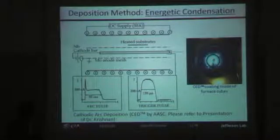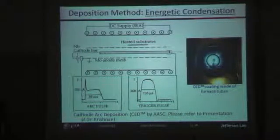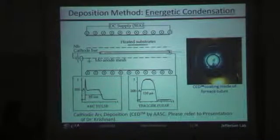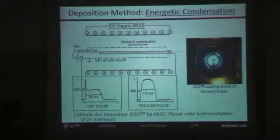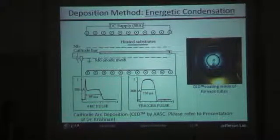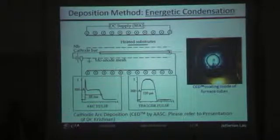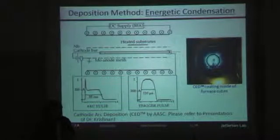First is the cathodic arc deposition. This is an energetic condensation method. You have a cathode bar, and a pulse is applied to the system, and the material is ejected towards the heated substrates through a fine mesh. The details of this will be covered in a talk later this week by Krishnan, so I won't go in-depth here. I'm not an expert on this deposition technique and just wanted to give everyone a feel for what type of samples we're looking at.